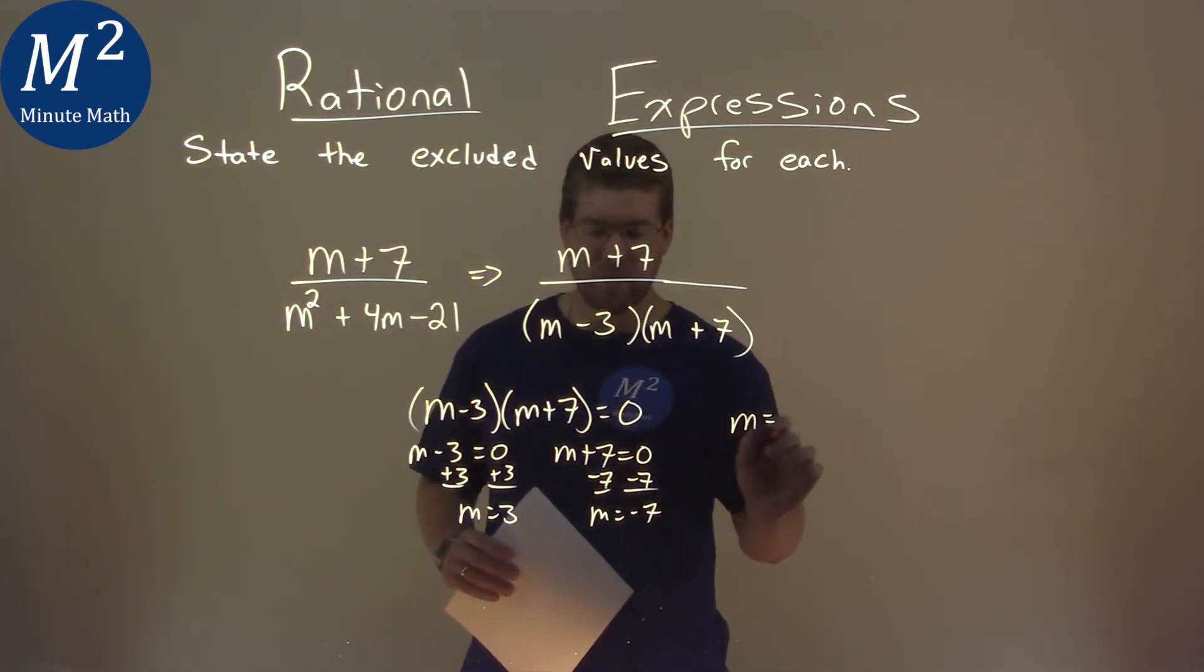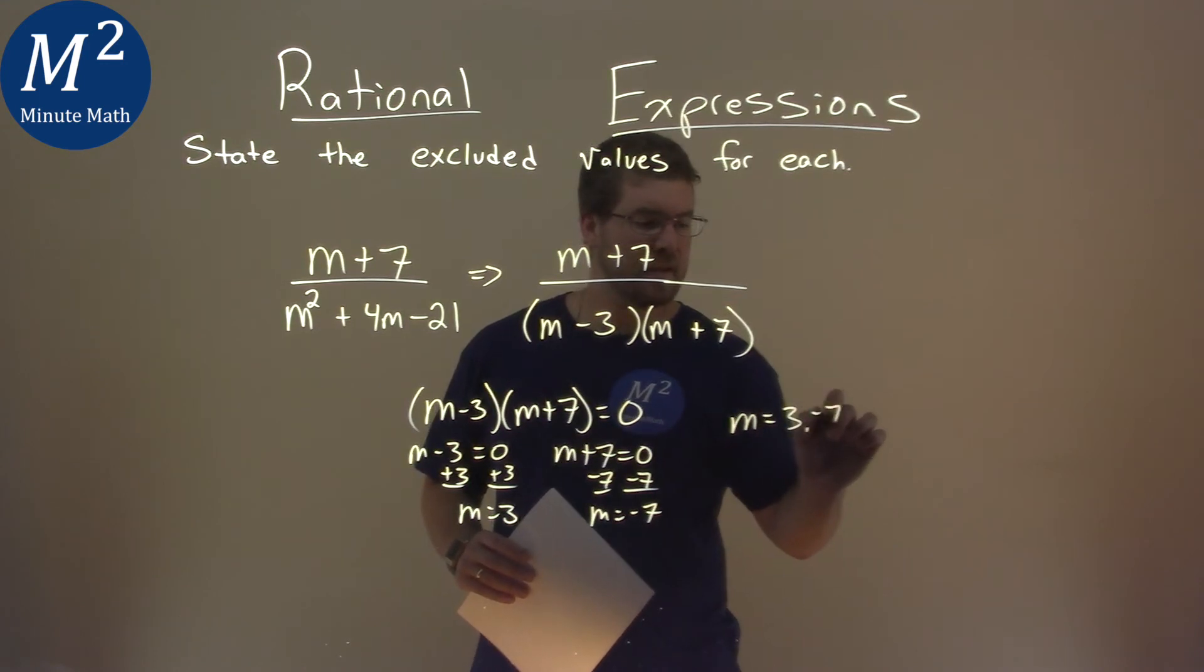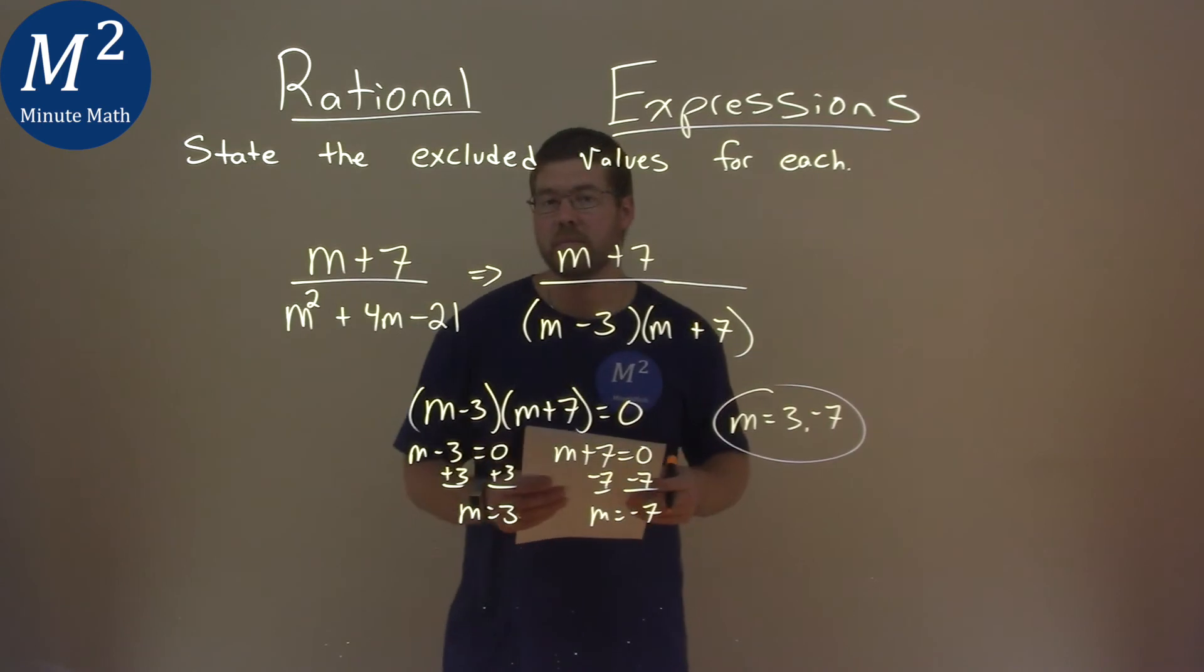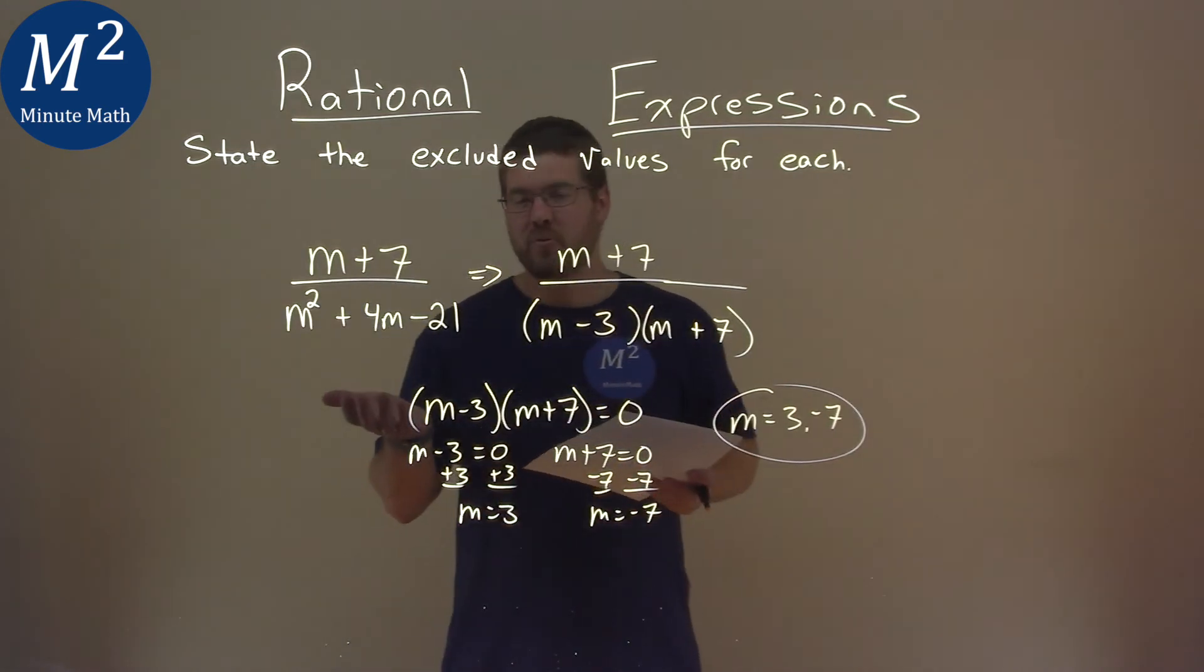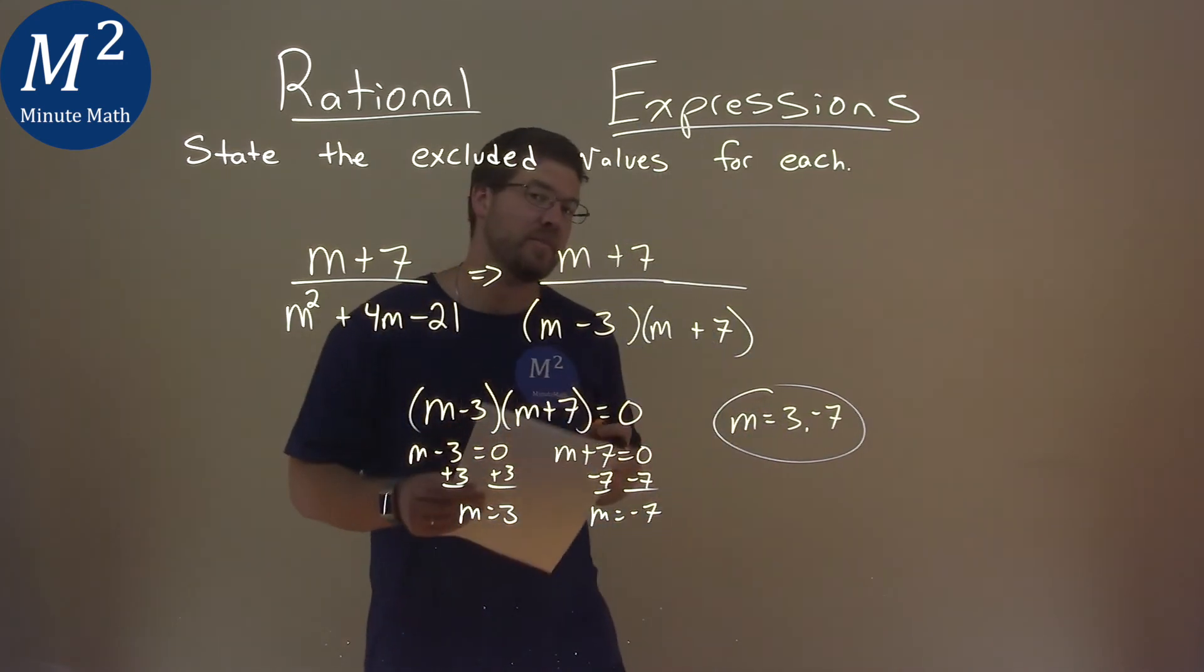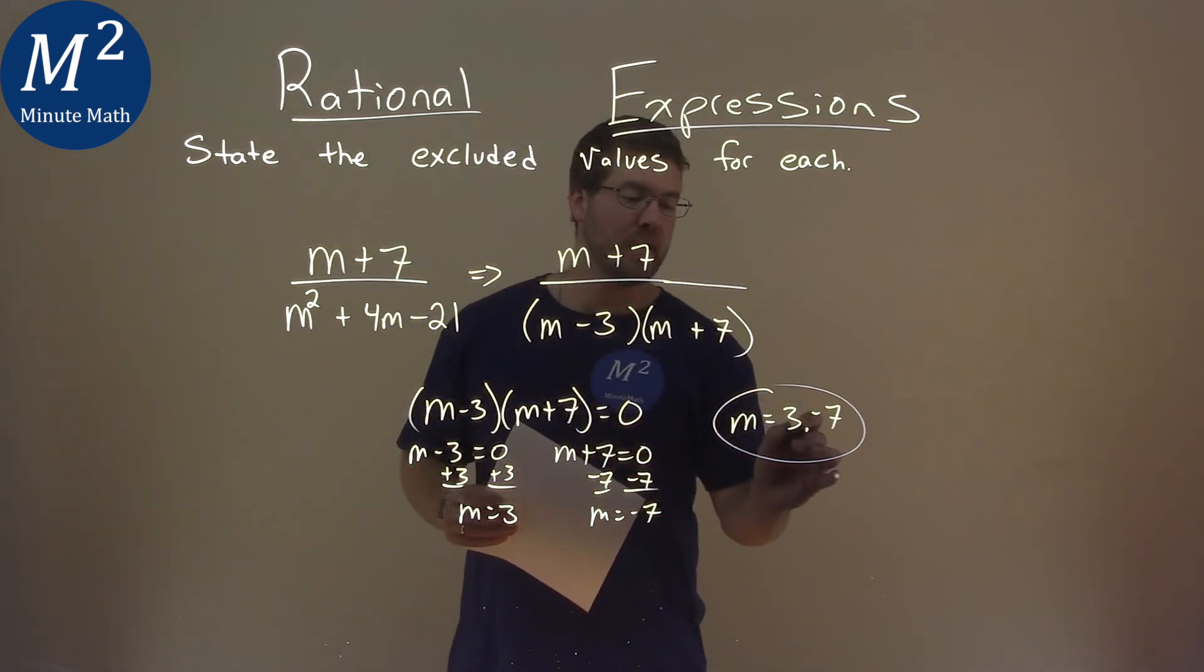And so our excluded values, 3 and negative 7 here, are the two values when plugged in to our equation here, make it not true. It doesn't really work, you can't divide by 0. So 3 and negative 7 are our excluded values.